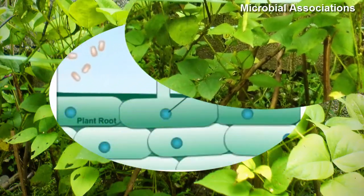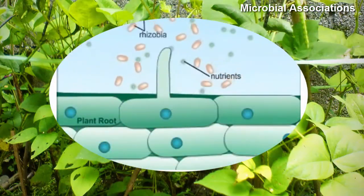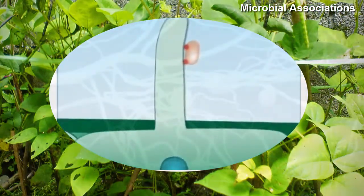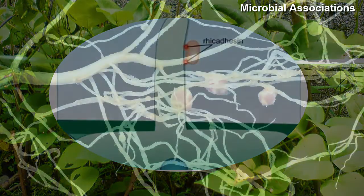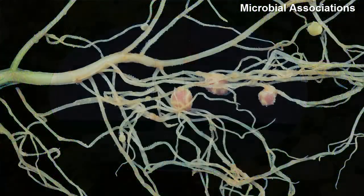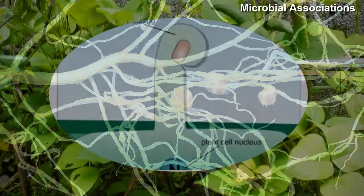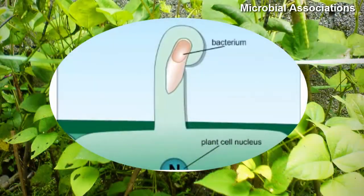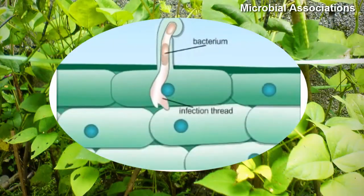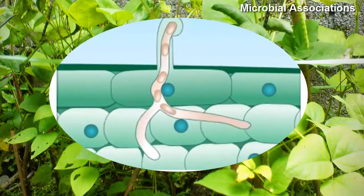Members of the legume family, which includes peas, beans, and a few other plants, form associations with certain soil bacteria that results in the production of numerous small swellings called root nodules that are clearly visible when such plants are uprooted. The nodules contain large numbers of nitrogen-fixing bacteria.